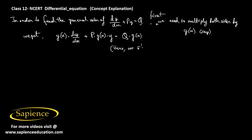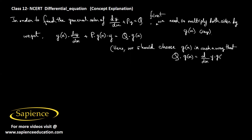We choose g(x) such that the right-hand side equals the derivative of y·g(x). That is, we need Q·g(x) = d/dx[y·g(x)]. This means: g(x)·(dy/dx) + P·g(x)·y = d/dx[y·g(x)].